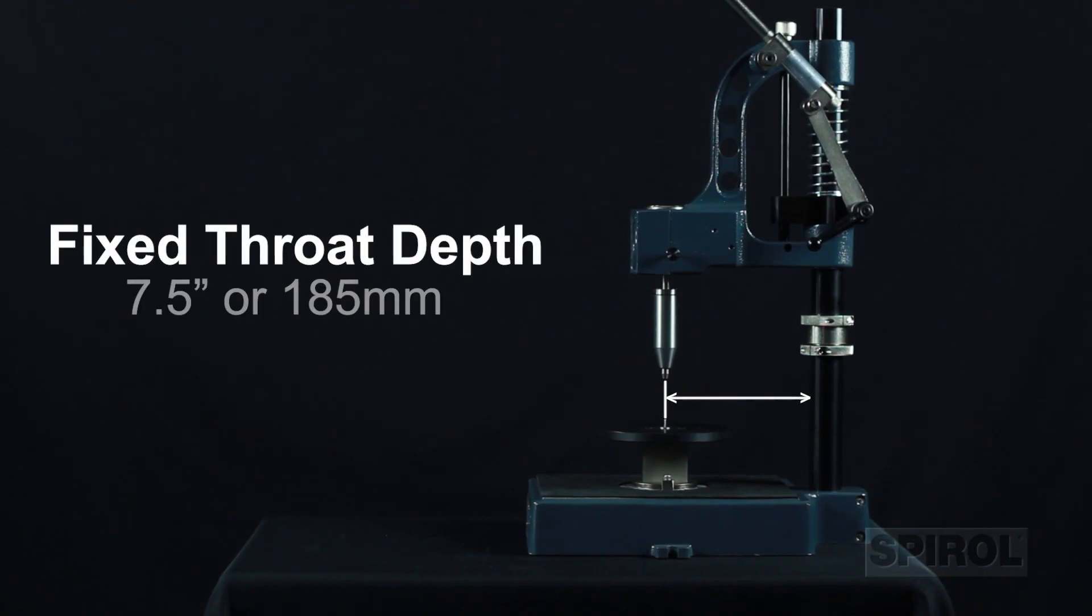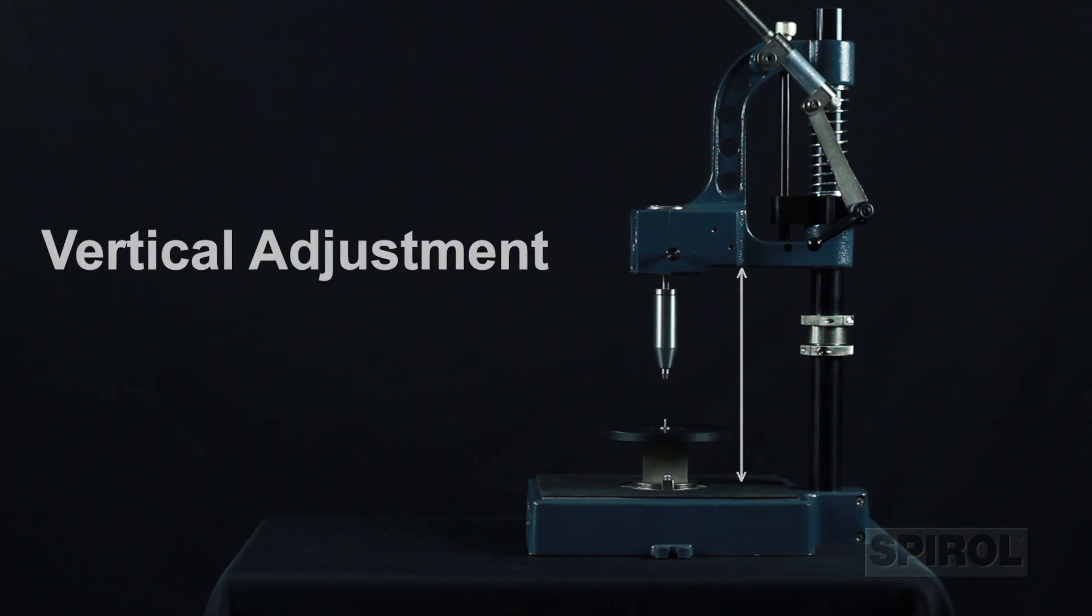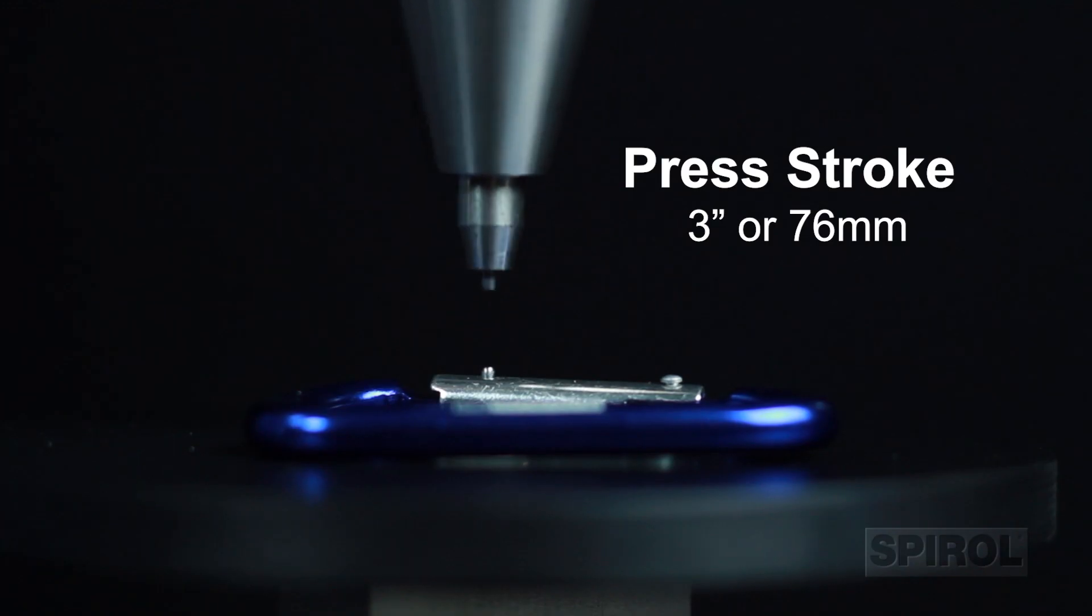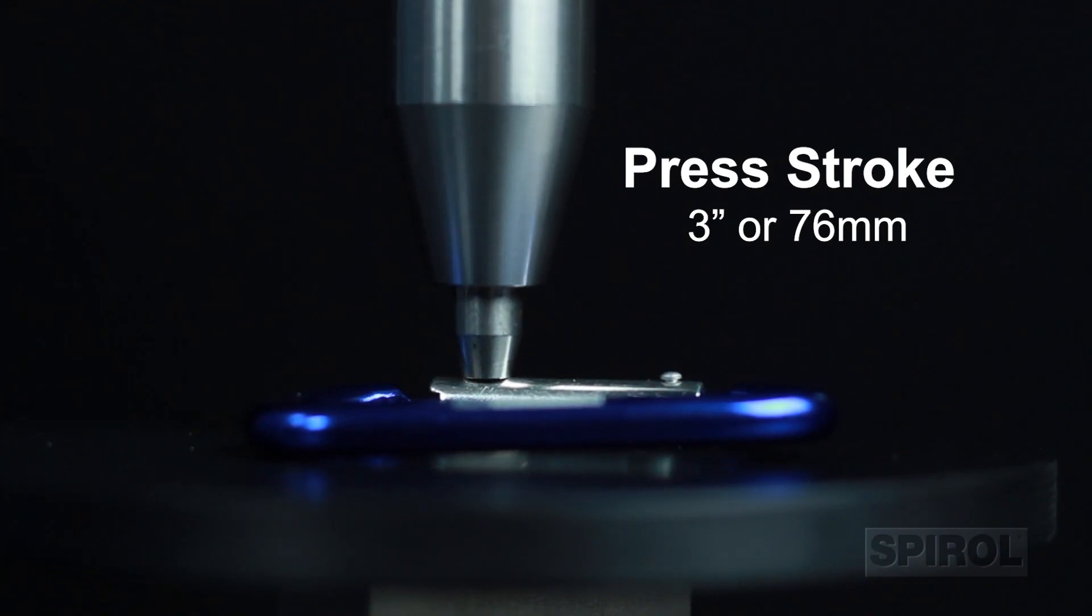The fixed throat depth is 7.5 inches or 185 millimeters with a vertical adjustment of up to 7 inches or 178 millimeters. Press stroke is 3 inches or 76 millimeters.